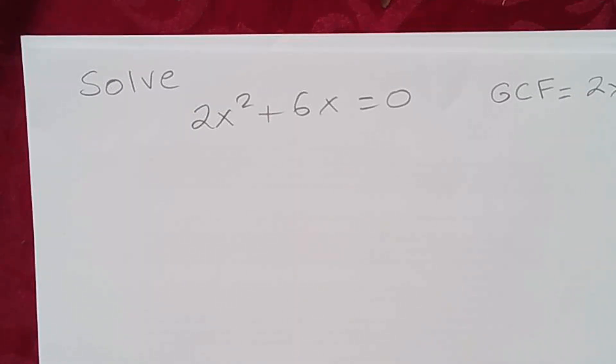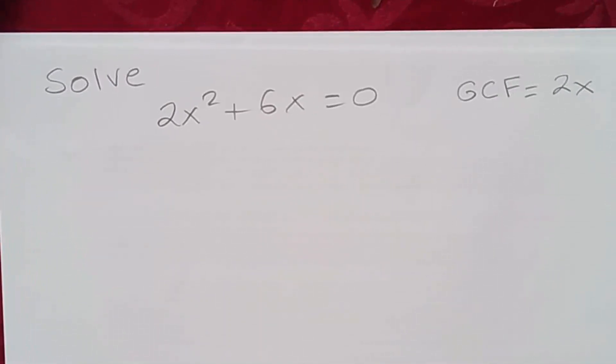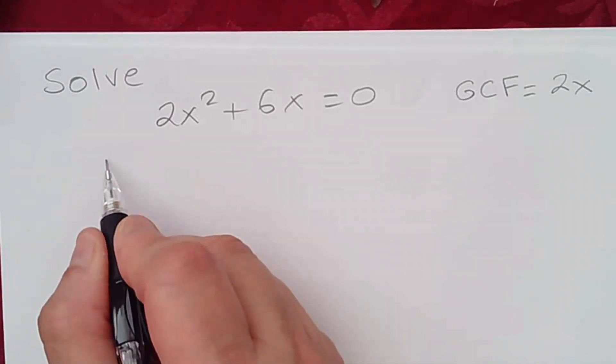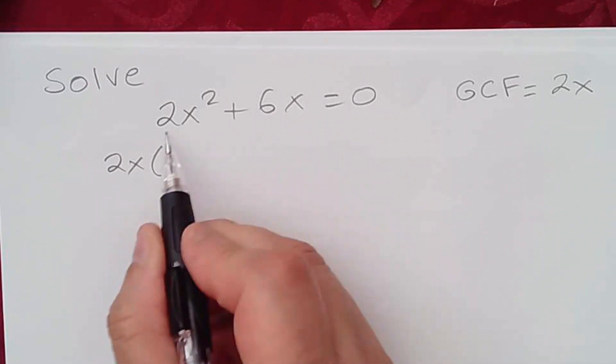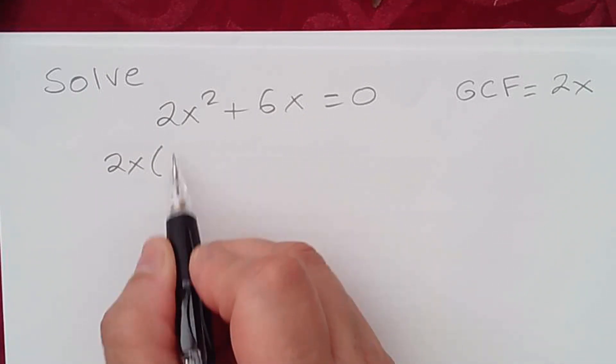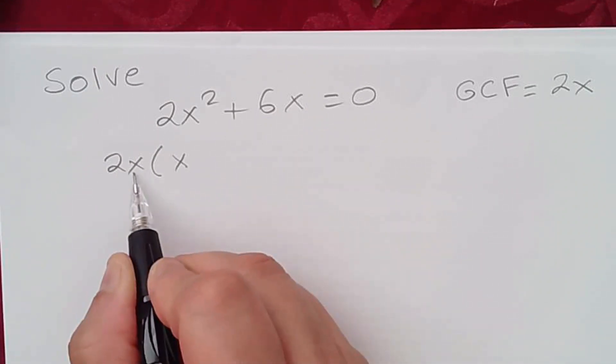Now that we have the greatest common factor, we need to factor it out. If we factor out 2x, what we get here is x, because 2x times x gives me 2x².